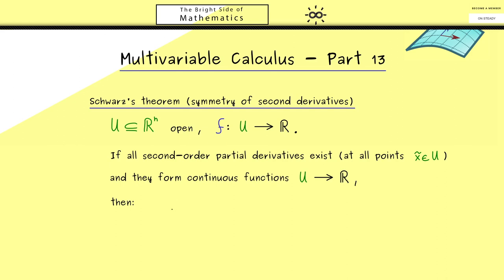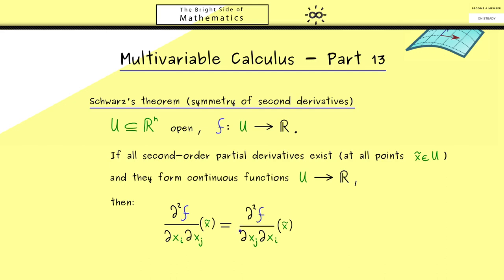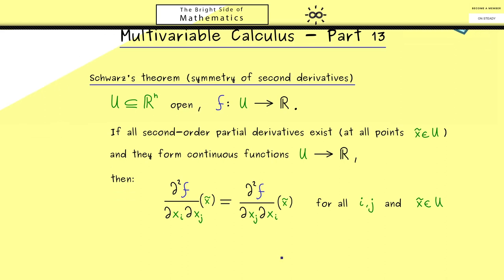Because then we can conclude that the order for the second-order partial derivatives does not matter. More precisely, first applying ∂/∂xj and then ∂/∂xi is the same as first applying ∂/∂xi and then ∂/∂xj, and this holds for all points x̃ in U and for all indices i and j. This is a very important result because it means we don't have to calculate so many second-order partial derivatives. By induction you can also apply this fact to higher-order partial derivatives.